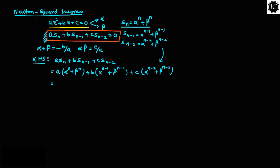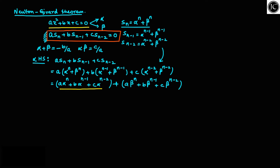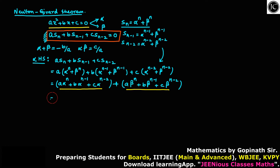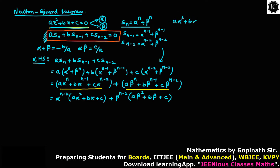Now if I open the brackets, what I am doing is taking alpha^(n-2) common from one bracket and beta^(n-2) common from the other bracket. If alpha^(n-2) is taken common, we are left with a·alpha² + b·alpha + c. Similarly, if I take beta^(n-2) common from the other bracket, we are left with a·beta² + b·beta + c.